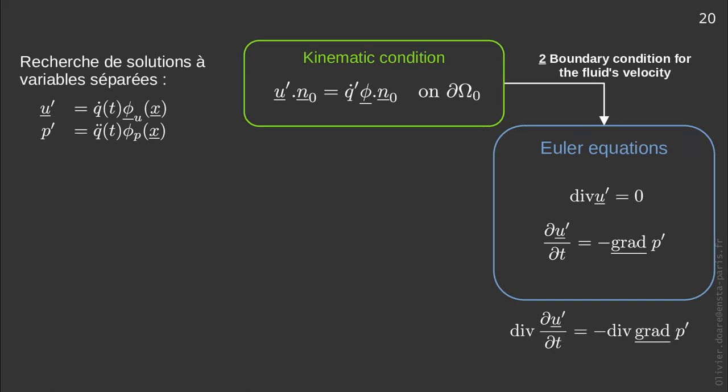Now let's take the divergence of the second line of the Euler equation. Since the spatial and temporal derivative can switch, and by virtue of the incompressibility relation, the term on the left cancels. Only the term on the right remains, which becomes the Laplacian of p'.